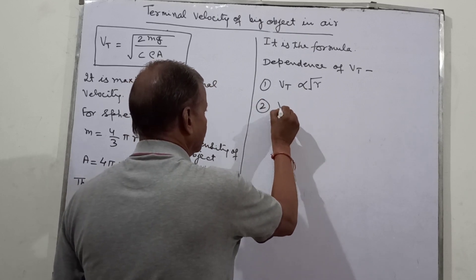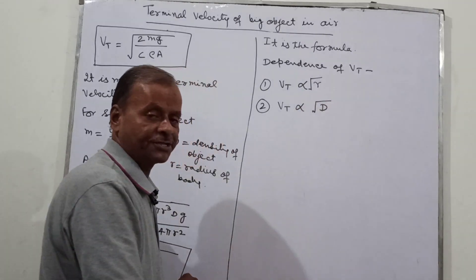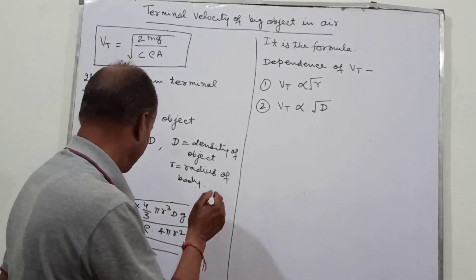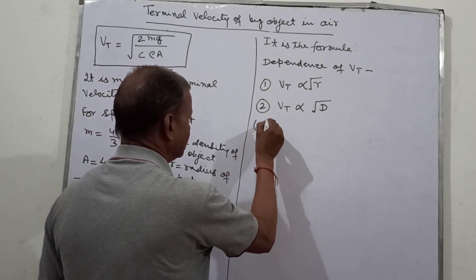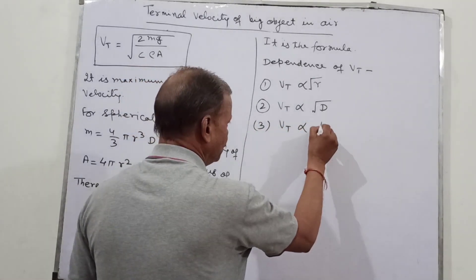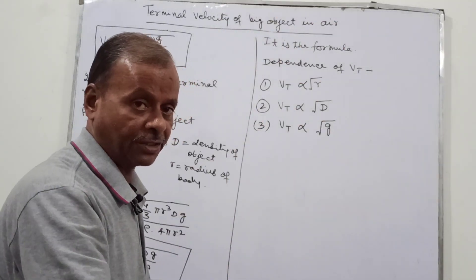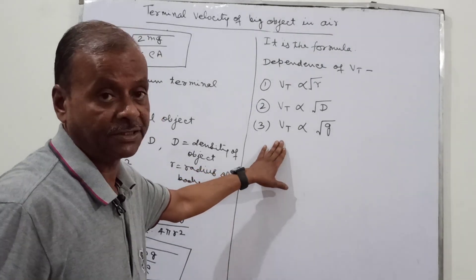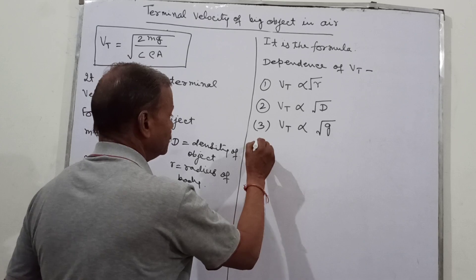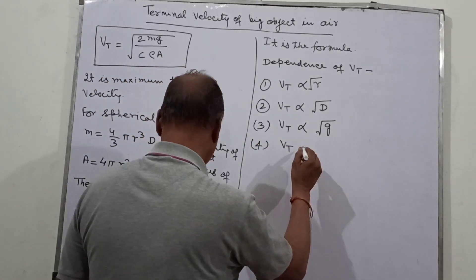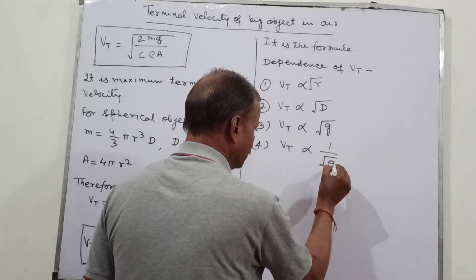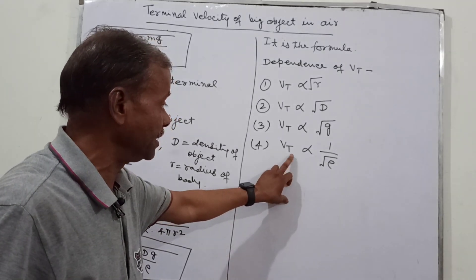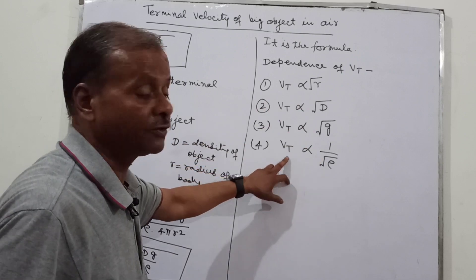Second, Vt is proportional to the square root of D, the density of the object. So the heavier the body, the more will be the terminal velocity. Third, Vt is proportional to the square root of g. As the body comes down towards the earth, the value of g increases, so Vt also increases. These are the increasing factors of terminal velocity.